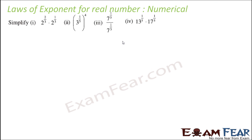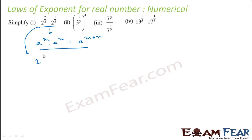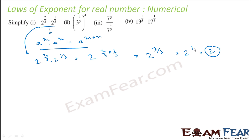Let's see the beauty of these formulas. We have 2 to the power 2 by 3 multiplied by 2 to the power 1 by 3 — a complicated-looking expression. Applying the rule a to the power m times a to the power n equals a to the power m plus n, this becomes 2 to the power 2 by 3 plus 1 by 3, which is 2 to the power 3 by 3, that is 2 to the power 1, which is simply 2.